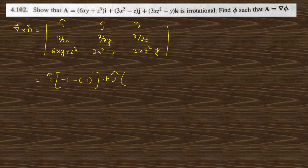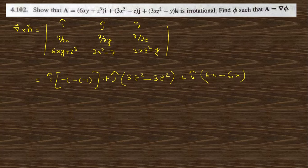The j-cap component: with respect to z this gives 3z², minus with respect to x which also gives 3z², so this is 0. The k-cap component: with respect to x this is 6x, minus with respect to y this is also 6x, so this is also 0. All three components are 0, so curl of A = 0. Since curl of A = 0, we can say A is irrotational.